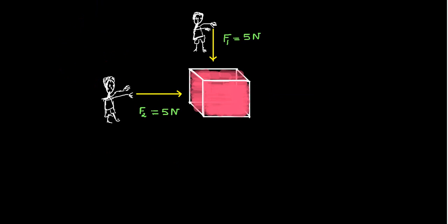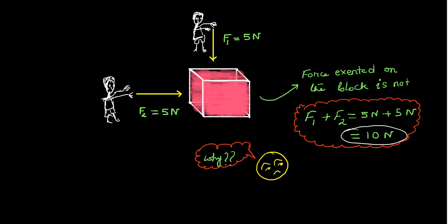Now let's take another example. Suppose this pink block is being pushed by two persons with equal forces of five Newton, but in different directions. If I ask you what is the total force acting on this block, it looks like ten Newton, right? But the answer is not ten Newton. Here, five plus five does not give us the correct answer.